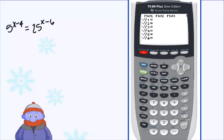Go ahead and hit Y equals and in Y1 put 5 to the x minus 4 power. And if you have a calculator that will not allow you to program directly into the exponent, then you need to put parentheses around x minus 4. Go ahead and hit enter and then we're going to do the same thing with 25 to the x minus 6.